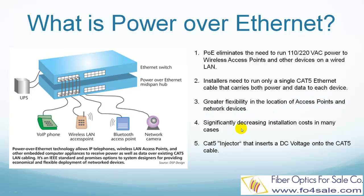This process begins with a Cat5 injector that inserts a DC voltage onto the Cat5 cable. As shown in this picture, a Power over Ethernet mid-span hub injects DC voltage onto the Cat5 cables and provides both power and data to the WES or IP phone, the wireless access point, and the network camera over a single Cat5 cable.